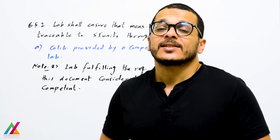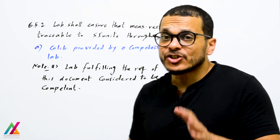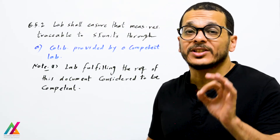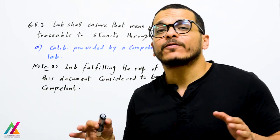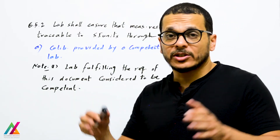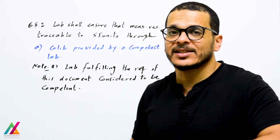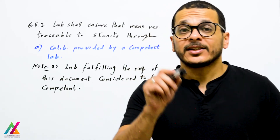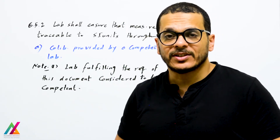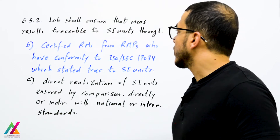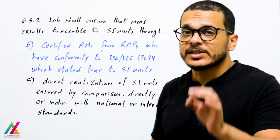The lab shall ensure that measurement results are traceable to SI units. First, calibration shall be provided by a competent calibration lab. Note 1 states that a lab fulfilling the requirements of ISO/IEC 17025:2017 is considered competent — so this lab shall be certified according to ISO/IEC 17025:2017.